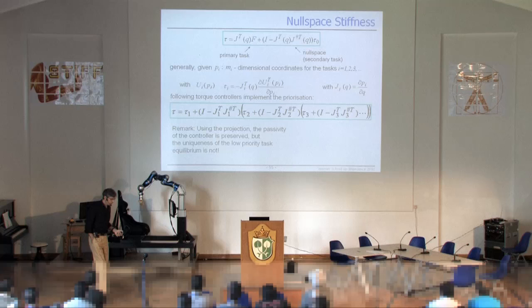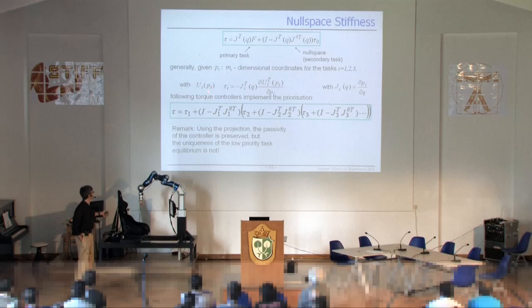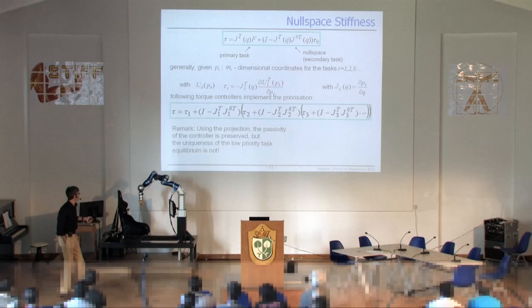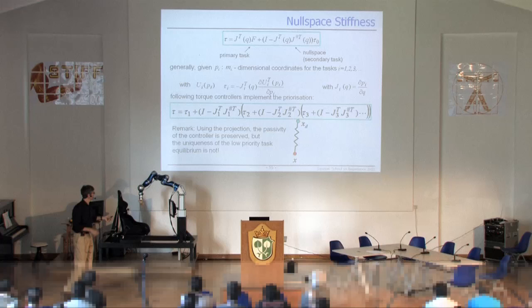A remark on that: we had a discussion with Osama about whether by this projection things remain passive or not. The answer is that indeed the projection preserves passivity. You can show that even if you cut something off of the torques tau2 and off of the potential, the system is still passive. But what happens is that uniqueness may be lost — you might design tau2 to have one global equilibrium, but because you project something, you might lose that unique equilibrium.